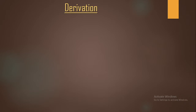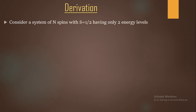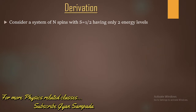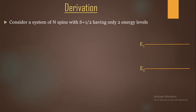Now let us move on to the derivation of spin-lattice relaxation — specifically the relation describing the rate of change of magnetization involving the spin-lattice relaxation time. To derive this, we consider a system of N spins with spin equal to one-half, which has only two energy levels with energies E1 and E2, each energy level having its own population.